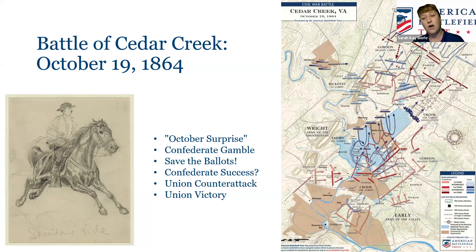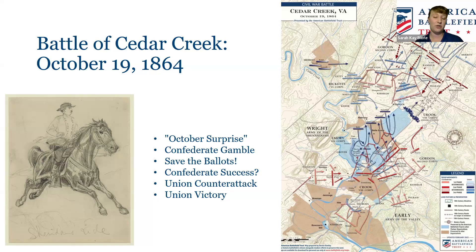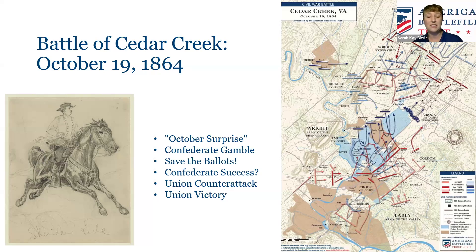In the midst of the Union rush to escape their attackers, there were officers and men who grabbed the ballot boxes and took them in their retreat — literally saving the vote. By midday, many Union soldiers had stopped retreating and started forming solid lines. The arrival of their beloved commander General Philip Sheridan further enthused them. In the mid-afternoon, a Union counter-attack swept back across the battlefield, Union camps were regained by sunset, and Confederates were pushed into a final retreat in the Shenandoah Valley.